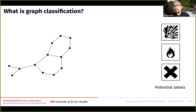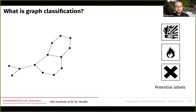I'll be talking about topological graph neural networks, primarily focusing on what we call graph classification. In graph classification, the main idea is that you're given a graph — such as a molecule or something arising from sensor measurements or some biomedical application — and you are tasked with assigning one of the potential labels to the graph. For example, the molecule could be flammable, water soluble, drinkable, harmful, or harmless. There is also a related problem called node classification, where you're interested in the role of individual nodes, but we will focus on the more global view of graphs here.